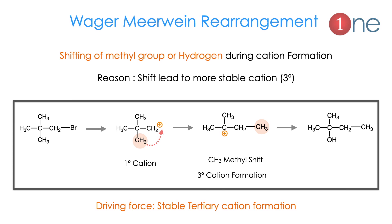Now let us see what is Wagner-Meerwein rearrangement. It means shifting a methyl group or hydrogen during cation formation. Even though a cation is formed, the intermediate always tries to convert into a tertiary cation — that is why groups shift. Here, on an alkyl bromide, loss of the bromide leaving group leads to a primary cation. To make it tertiary, the methyl group moves and a tertiary cation is formed. So the rearrangement occurs because the methyl group switched.